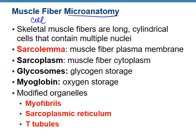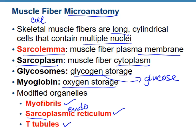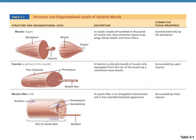Now we need to look at the microanatomy of the muscle fiber cell. Muscle fiber cells are long and have many nuclei. They have a sarcolemma, which is the plasma membrane, and a sarcoplasm, which is the cytoplasm. There are glycogen storages — remember glycogen is how the body stores glucose — and myoglobin for oxygen storage. Modified organelles include myofibrils, sarcoplasmic reticulum, and T-tubules. The sarcoplasmic reticulum is the same as endoplasmic reticulum from Chapter 3.